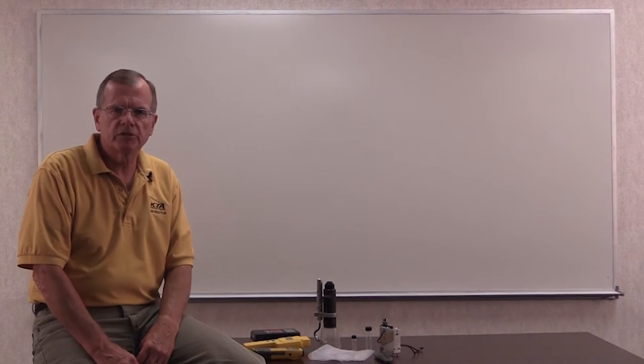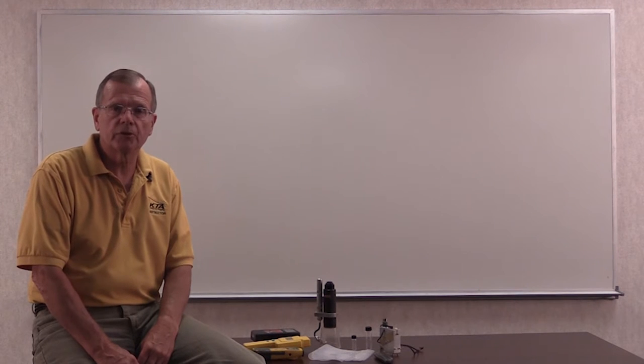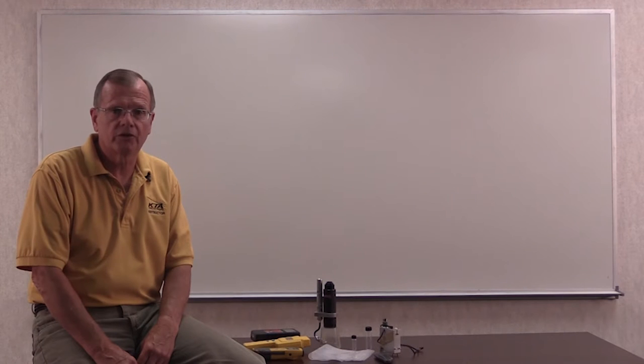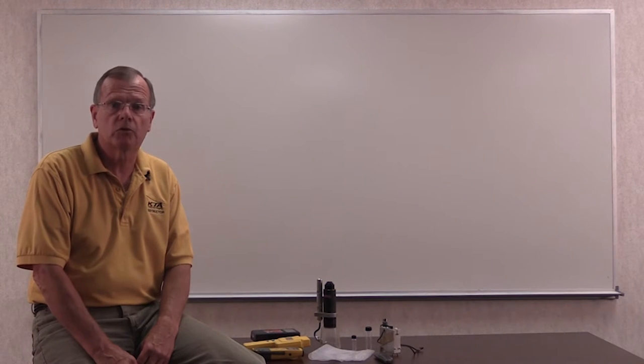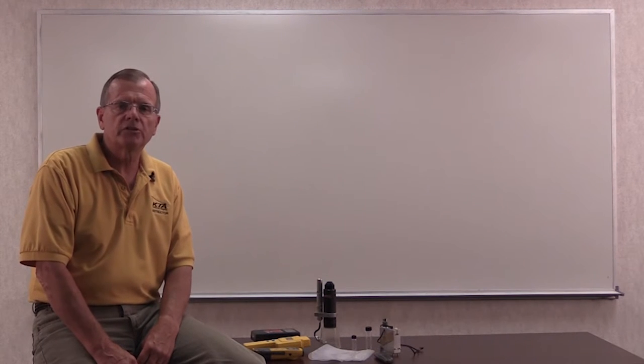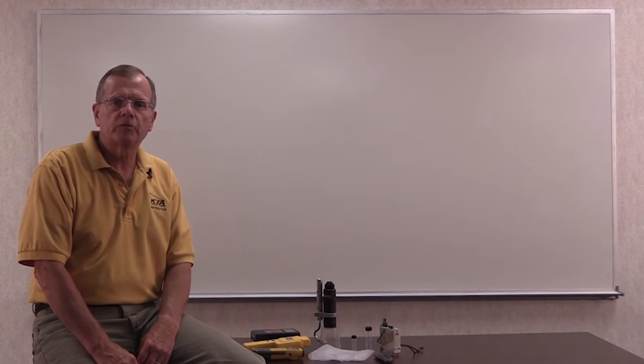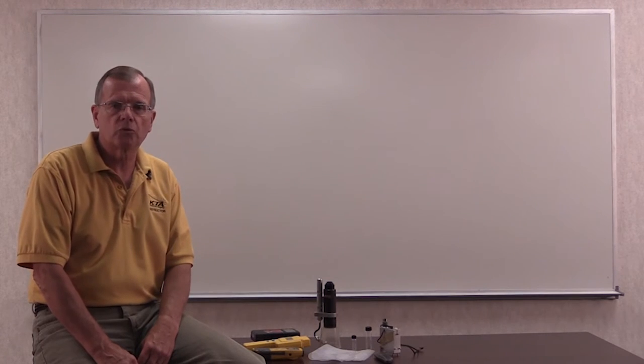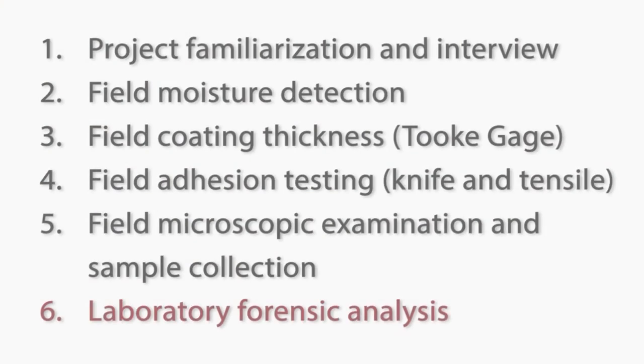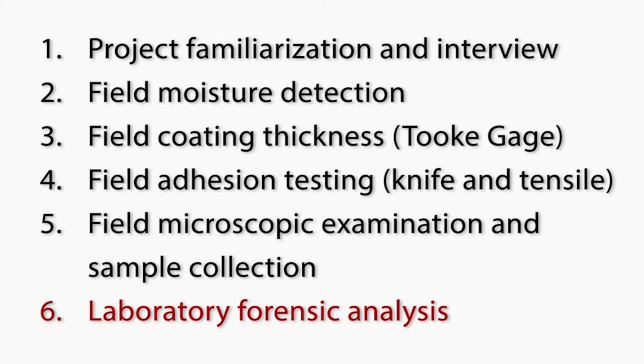This is part six of a six-part series that describes the field and laboratory techniques used to determine why there was intercoat delamination of a coating system applied to a concrete floor. Each part is stand-alone, but when viewed in order, they present the key findings from an actual project.